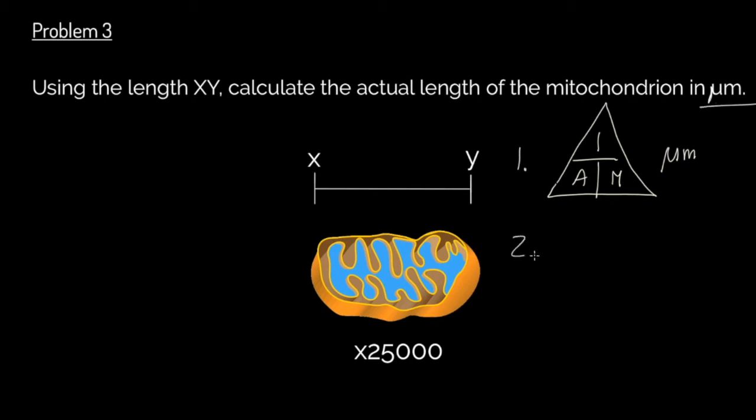What do we do first? We always draw our equation triangle and we remind ourselves of I AM and we must use our units, which we know already are micrometers because we've got it here in the question. Stage two, as always, we ask the question, what do we want to find out? So again, equation triangle. What do we have and what do we not have? Well, in this scenario here, we of course have the magnification because it's down here in the question. We have the image size because we can measure XY, so that's good. What we don't have is we don't have the actual size of the object.